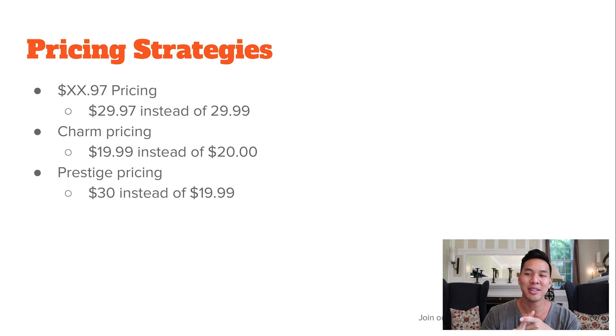There are three different types of pricing strategies I use when selling on Amazon. One is ending everything in 97 cents, one is 99 cents, and one is a whole number. I've found that 97 cents converts better, but the way I start testing is at the 99 cent mark — going from $19.99 to $18.99 to $14.99 — and I'll find which one is best with an A-B test. Then I'll A-B test, say $14.99 versus $14.97.